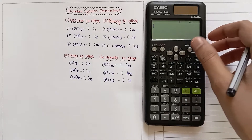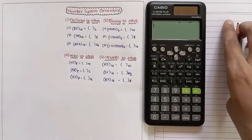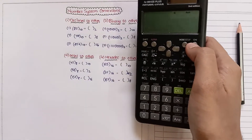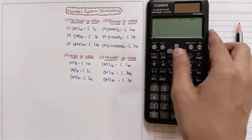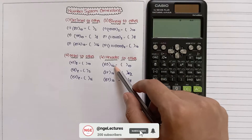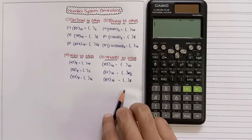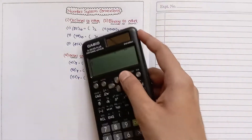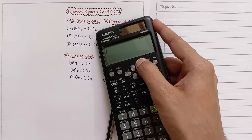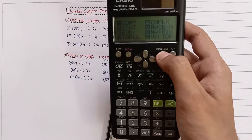Hi friends, welcome to our channel NG Lectures. In this video we will see all number system conversions in a scientific calculator. We will perform these operations so that you will get clarity on how to do number system operations in the calculator. First we will convert decimal to other number systems: binary, octal, and hexadecimal. Press the Mode button and select the Base-N option, option 4.